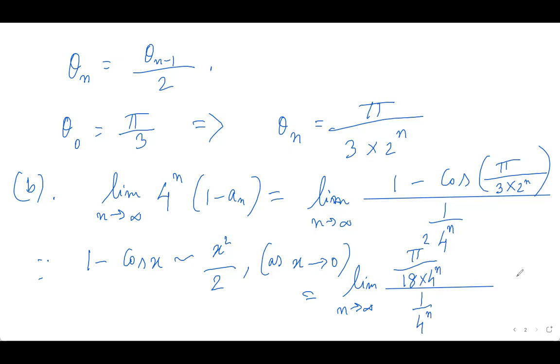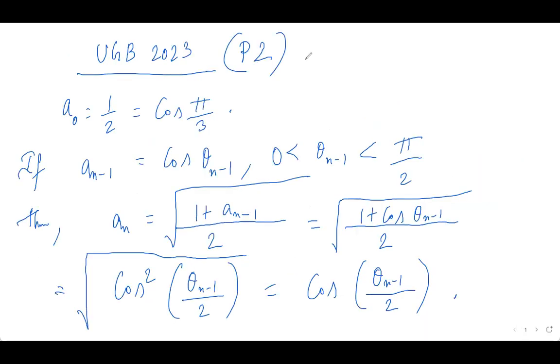And as n is tending towards infinity, so this limit is basically coming out to be then pi squared by 18. And thus we are done with our problem 2. So that's it for this problem.